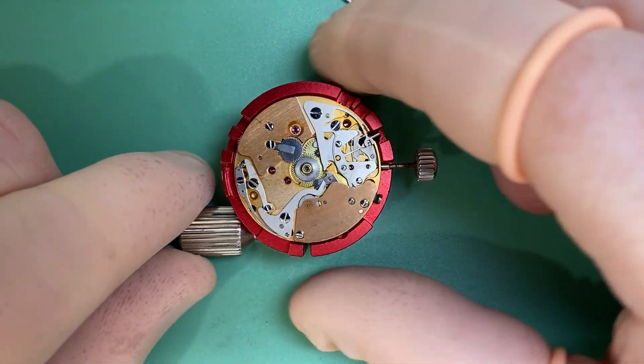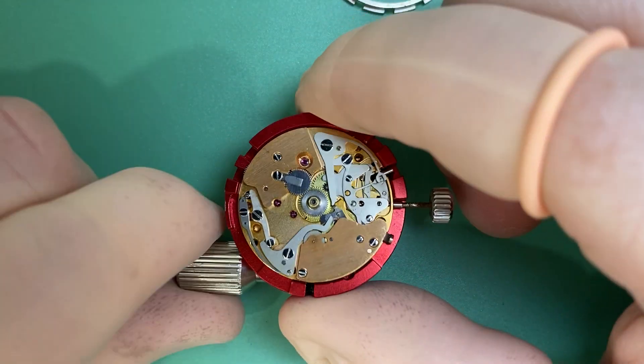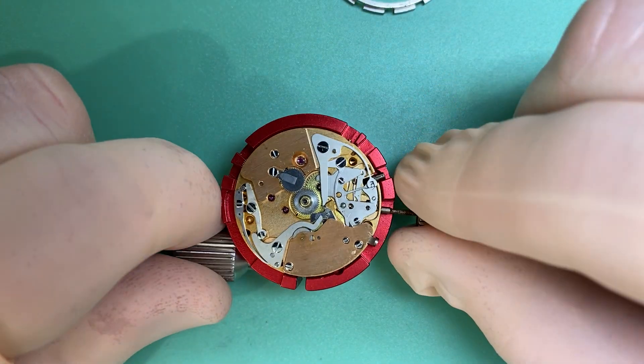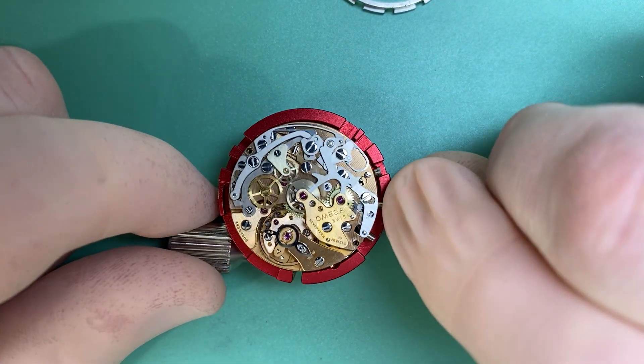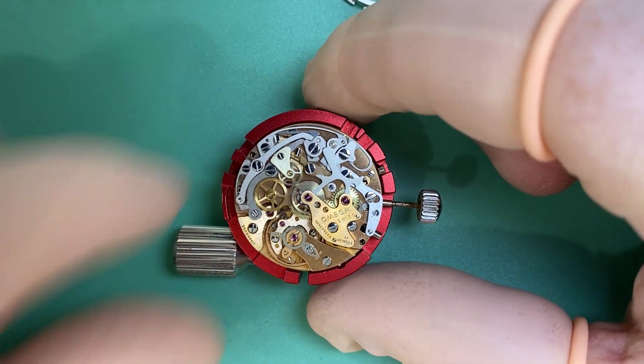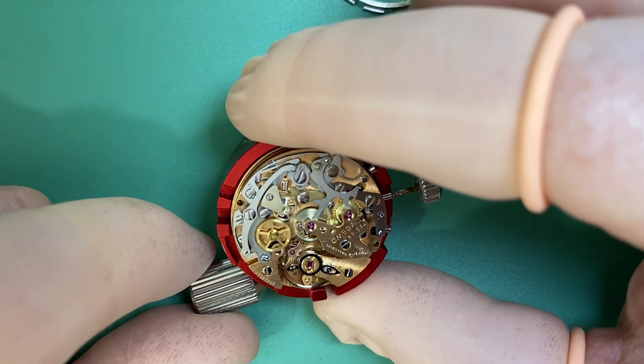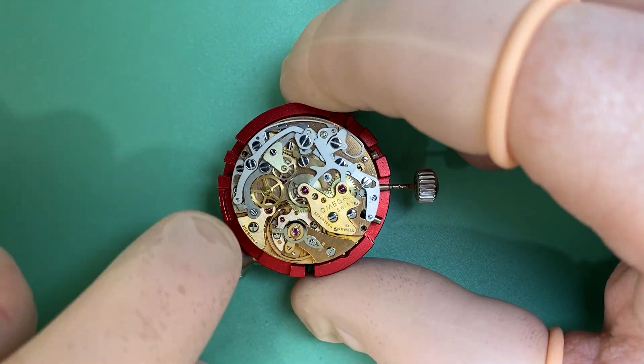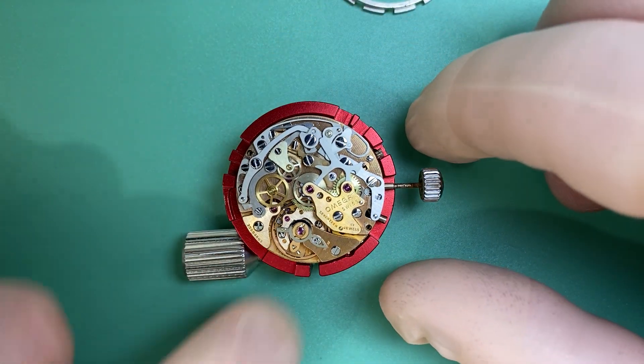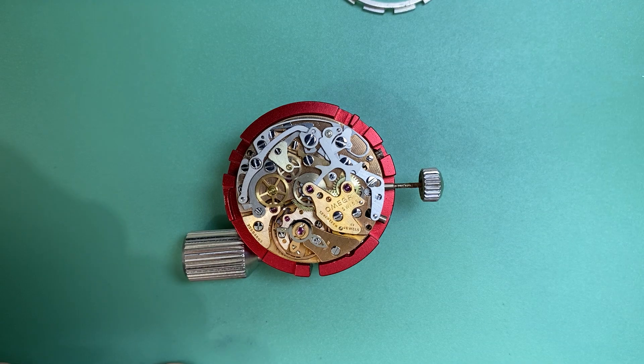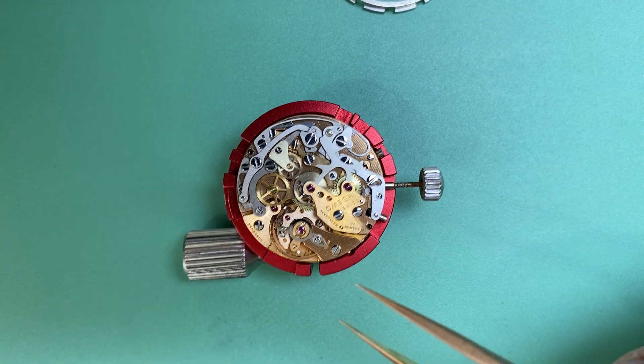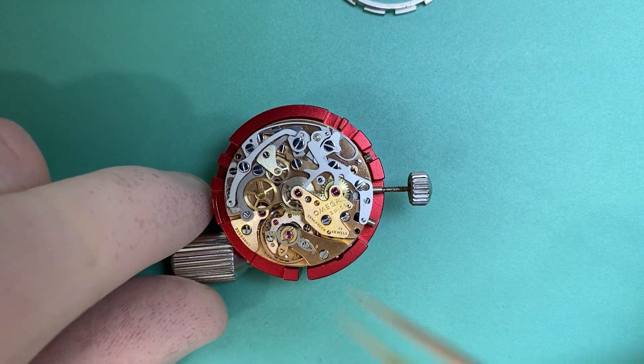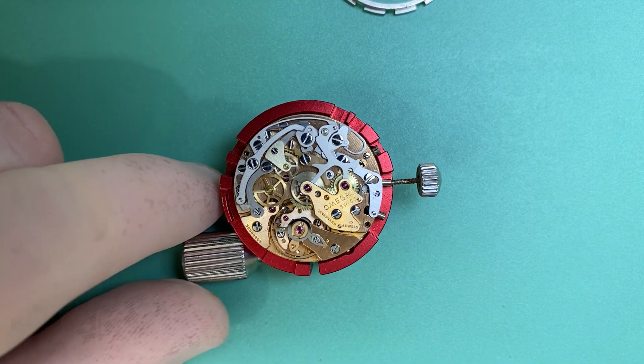Now the Omega Flight Master is a pretty simple watch movement. It's based on the 861 movement, but it has a few modifications. So it's the 911, the 911 Omega movement that we have stamped on the main plate here. So if we were to look at it from the movement side of the watch, we would recognize that that is an Omega 861 chronograph movement.